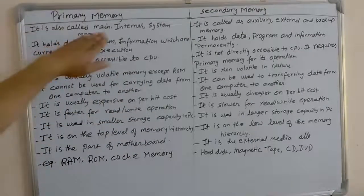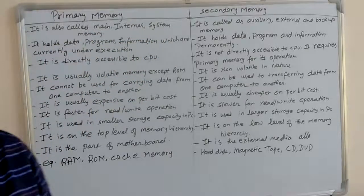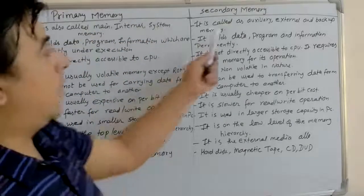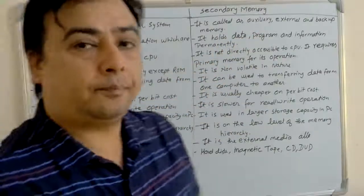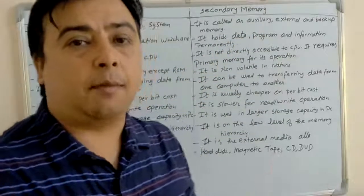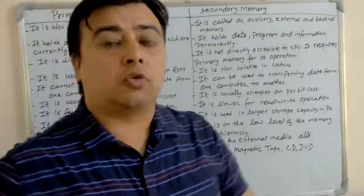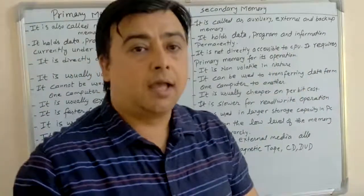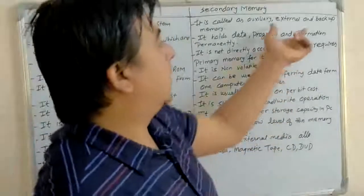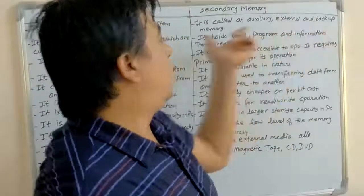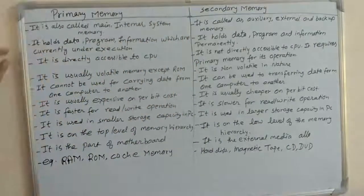Primary memory is also called main memory, internal or system memory. But secondary memory is called auxiliary memory — it is not the main memory. It is used to store a huge amount of data, and it is also known as mass storage device, external memory, or backup memory.